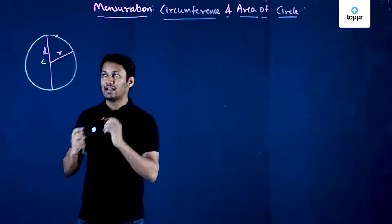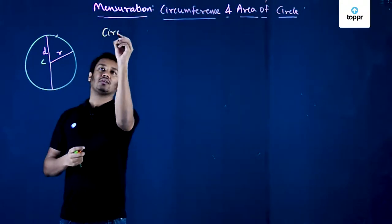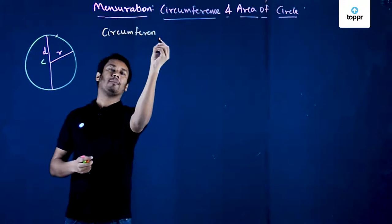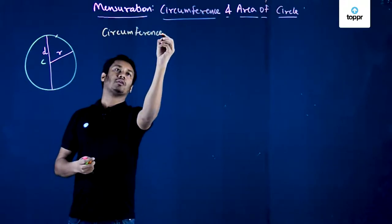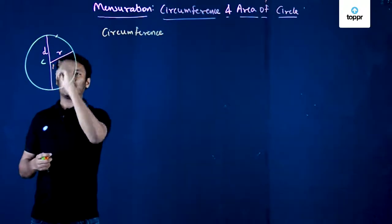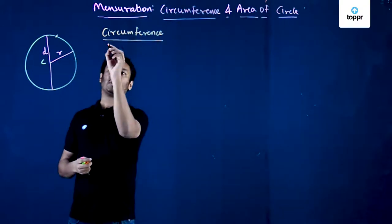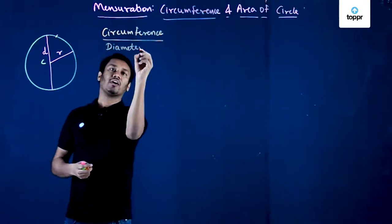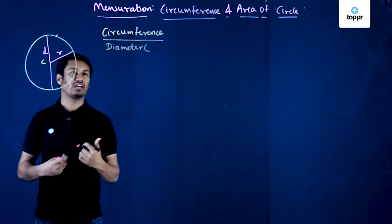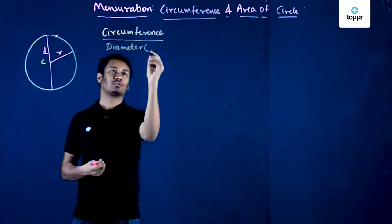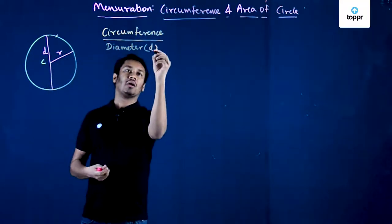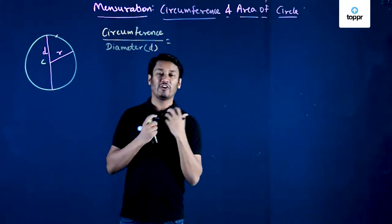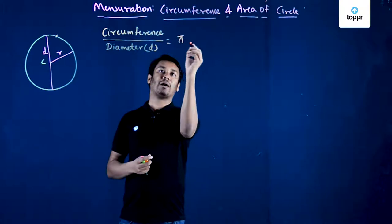Now let us see what circumference is mathematically. I can relate circumference with the diameter of the circle. If I take the ratio of circumference to diameter, this ratio comes out to be a very interesting constant, which we call pi.